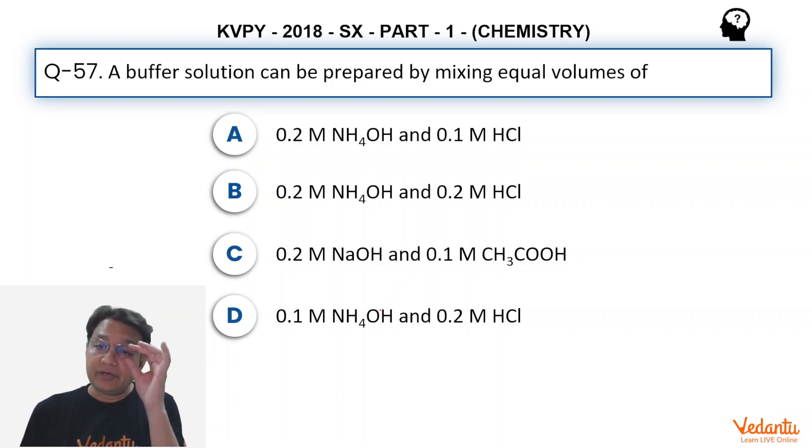A buffer solution can be prepared by mixing equal volumes of which of the following? One of the principles of this problem is a buffer solution must contain considerable amount of conjugate acid-base pair. Considerable amount means concentration at an appreciable level, that is 0.1 mol per litre, 0.01 mol per litre or something like this.